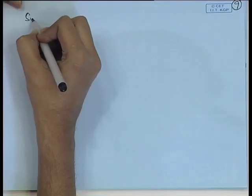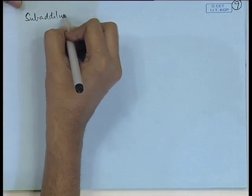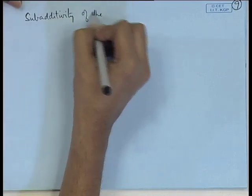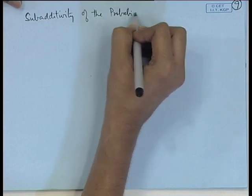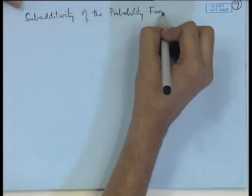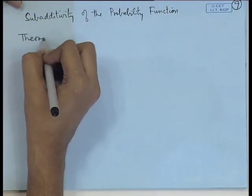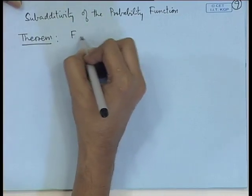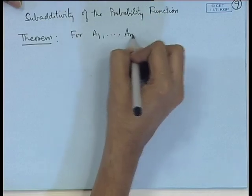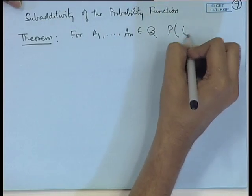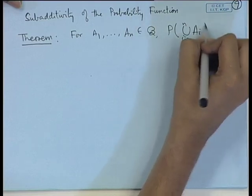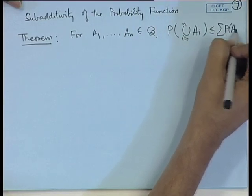In general, if we consider any sequence of sets, the probability of the union will be less than or equal to the sum of the probabilities. We have sub-additivity of the probability function. We can state it as a theorem: for A_1, A_2, ..., A_n belonging to the sigma-algebra B, the probability of union A_i, i=1 to n, is less than or equal to sigma of probability of A_i.